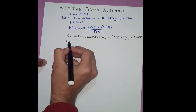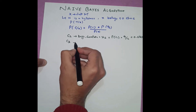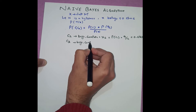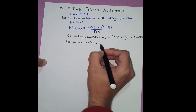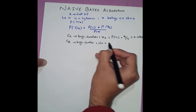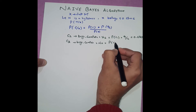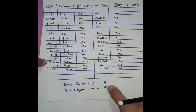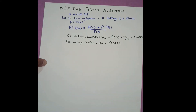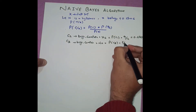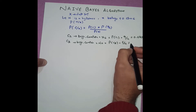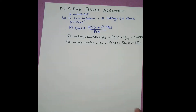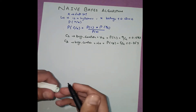Similarly, I create class C2 where 'buys computer = no'. Its probability P(C2) equals five (the no count) over overall data of 14. So P(C2) = 5/14 = 0.357.